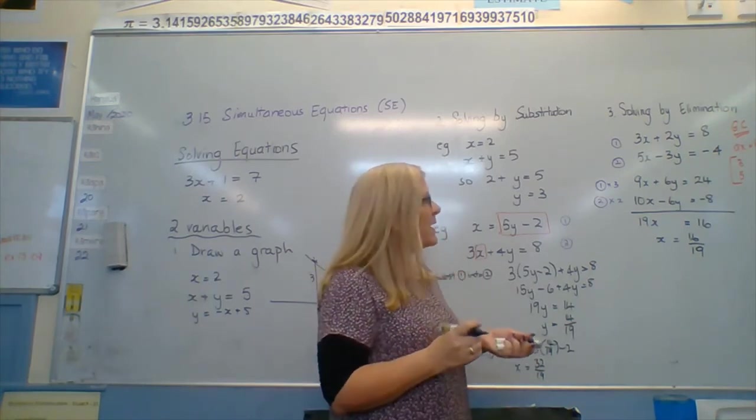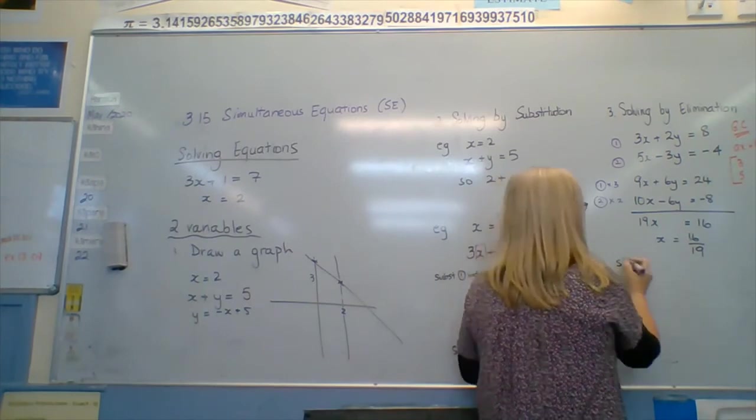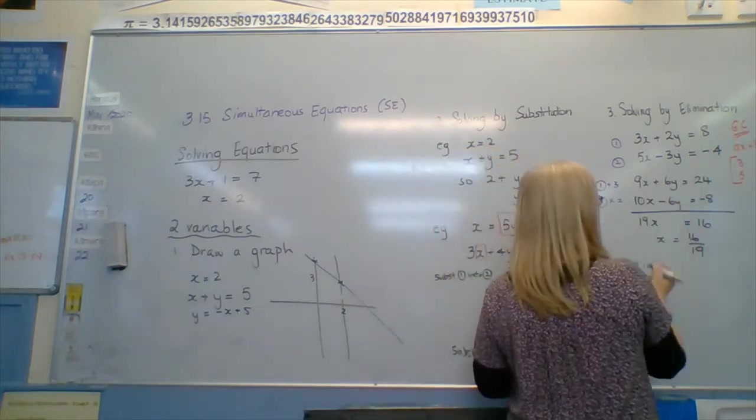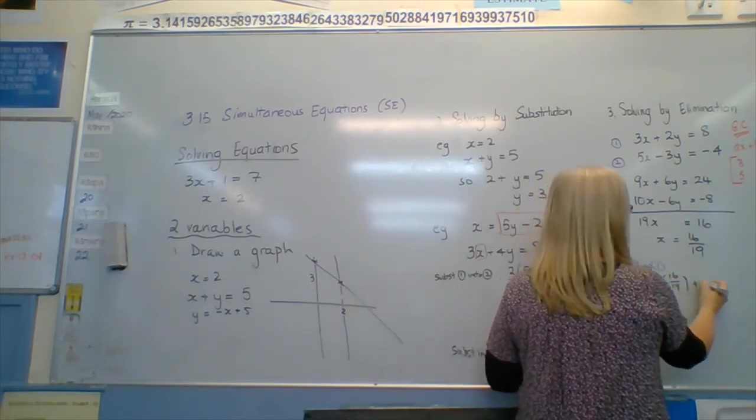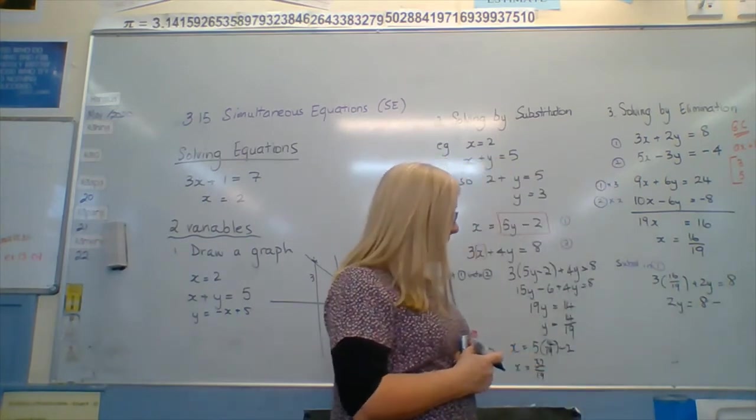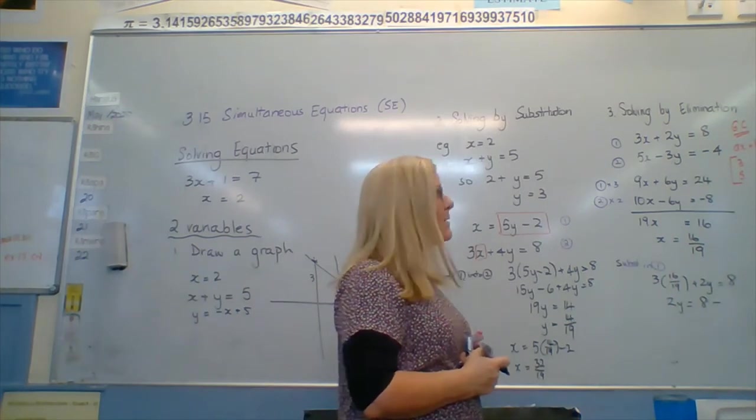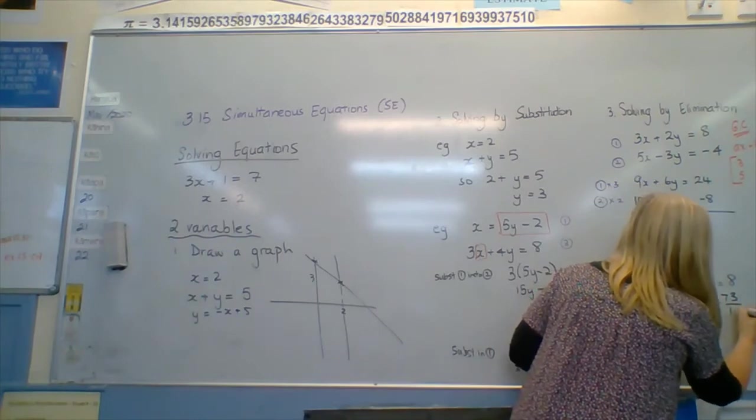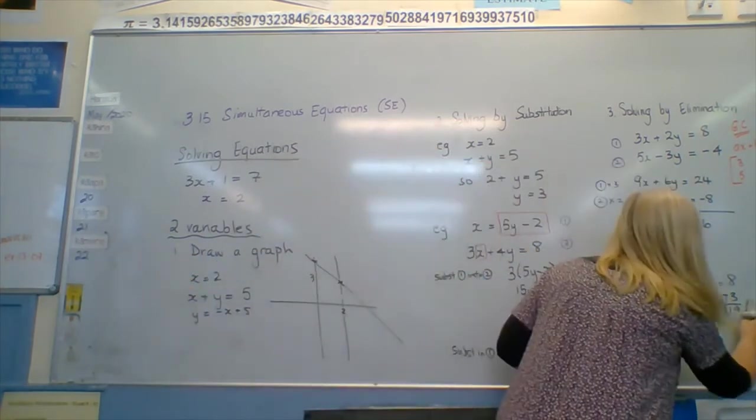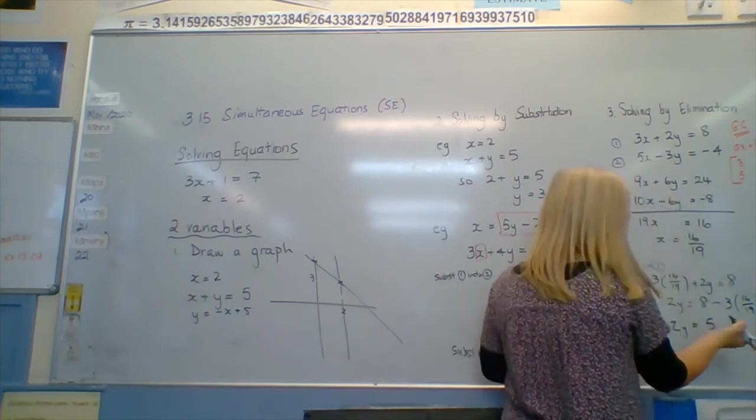Now the trickier part here is it doesn't say y equals. But we still just pick one or the other to substitute back into. So I'm going to substitute into 1, because it has nicer looking numbers, that's the only reason. 3 times 16 over 19 plus 2y equals 8. So 2y equals 8 minus 48 over 19. 8 take away 3 is 5, then take away 16 19ths leaves us with 3 19ths. Still easier.